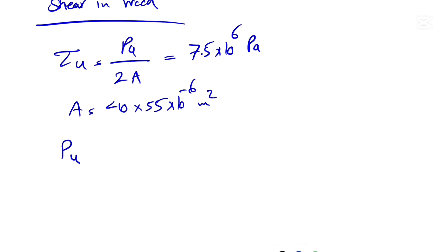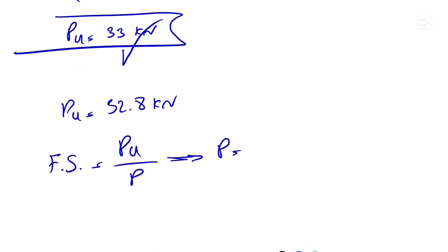Again, we are going with the lowest just to make sure it's not going to fail the other members in this system. We have the factor of safety, which would be our ultimate P over P. P is what the question is asking, so we're gonna have Pu over our factor of safety.